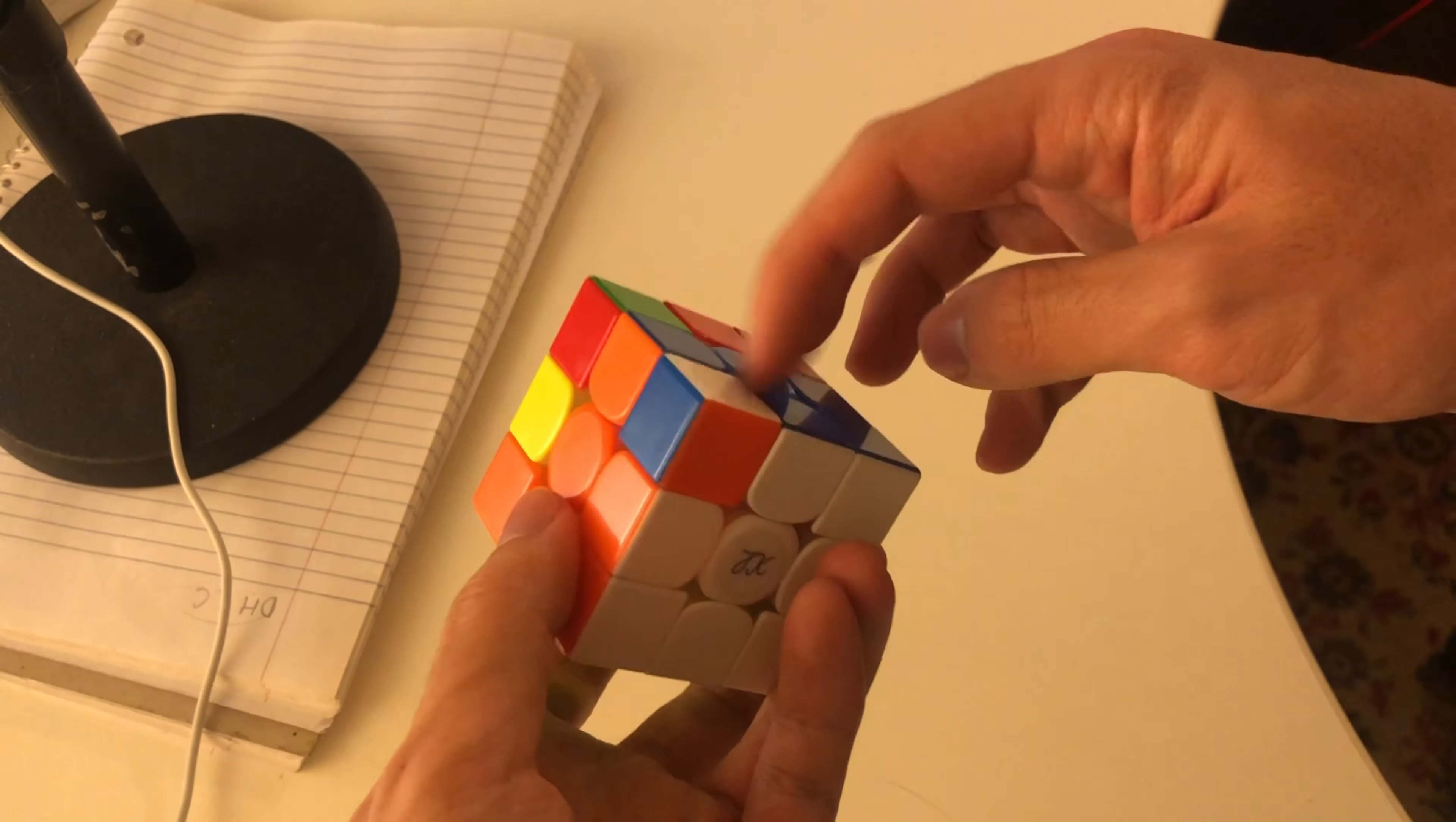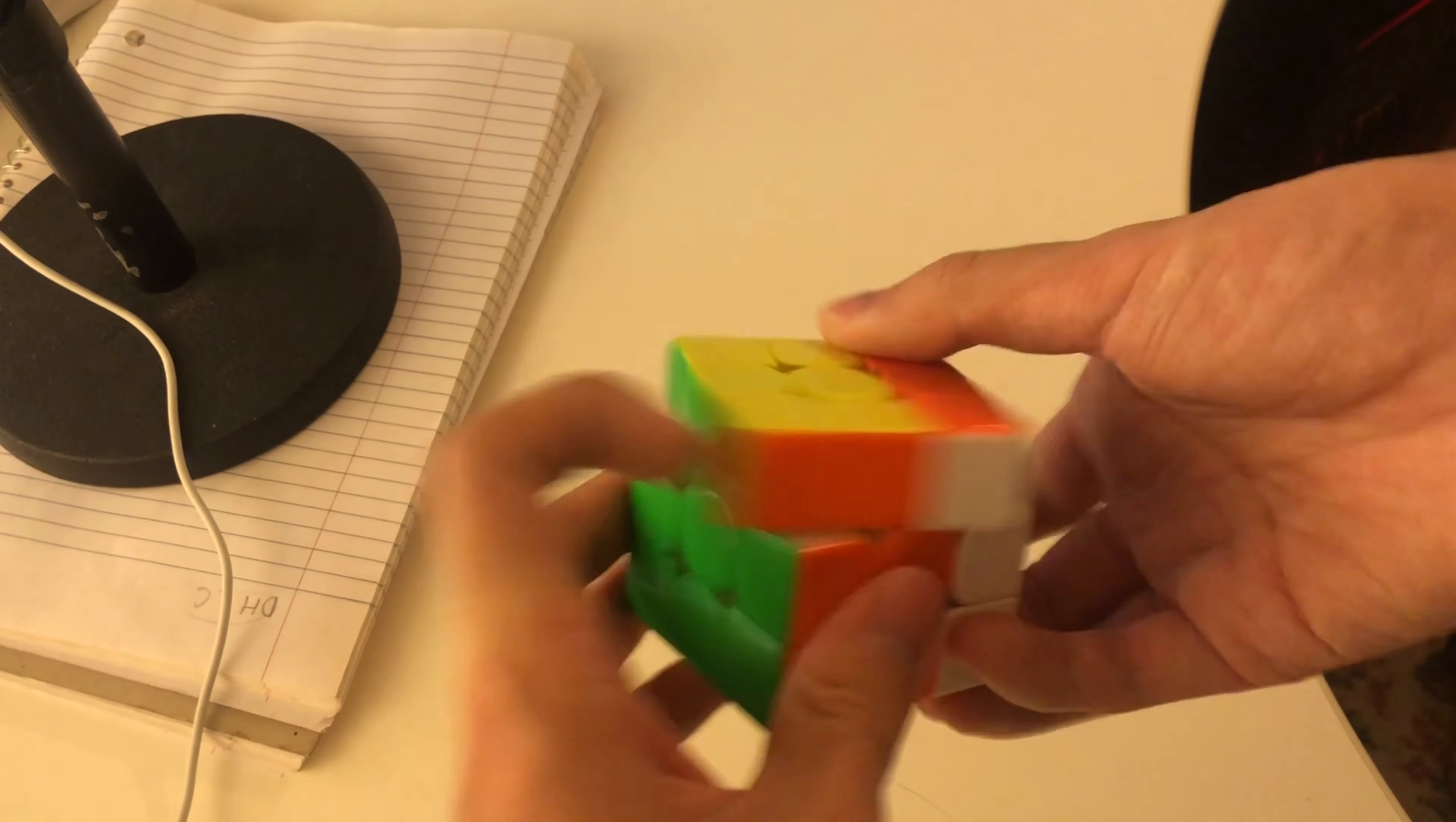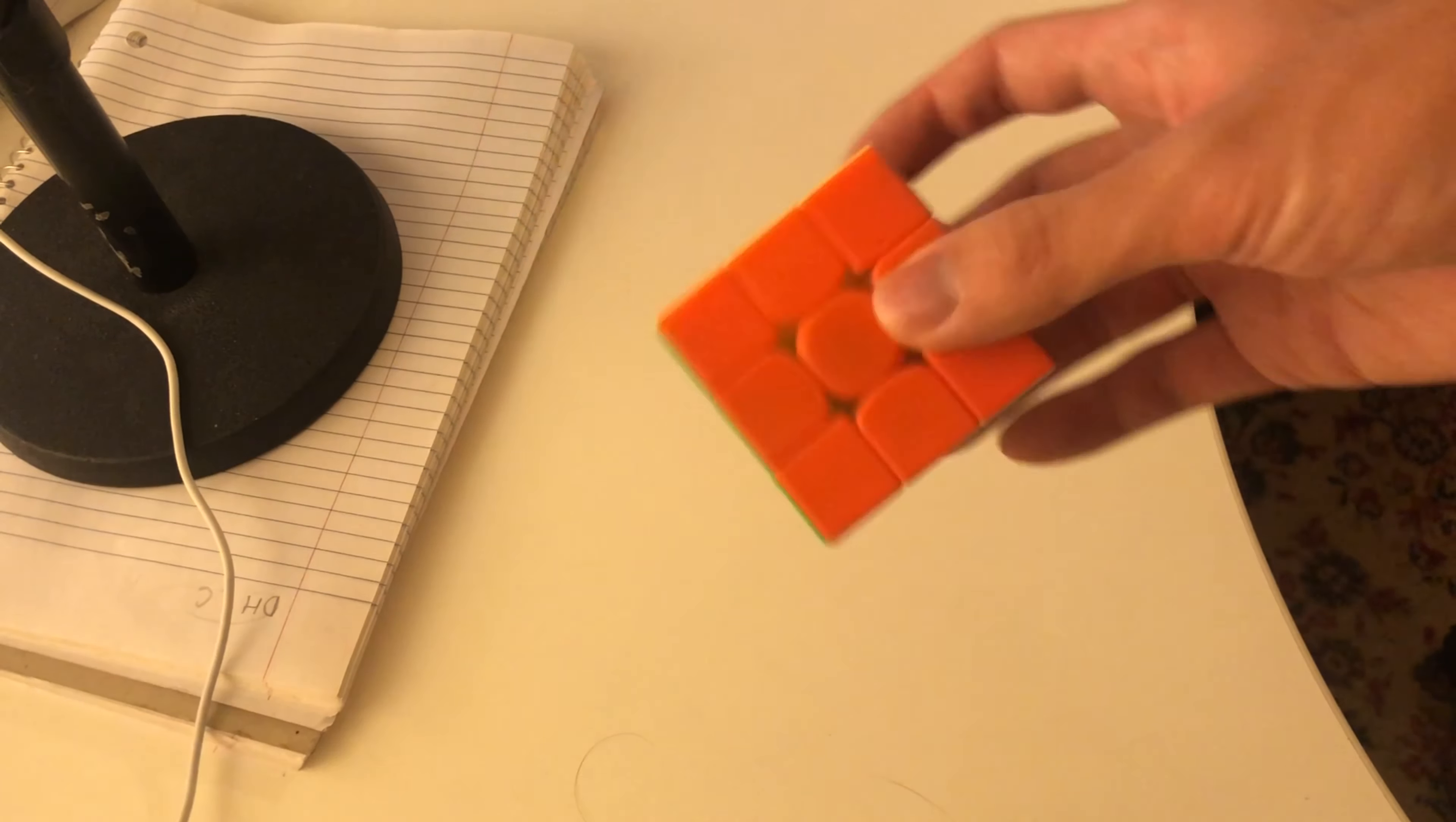And then, I guess this is not a good case, but we have one of the easiest OLLs, F-Sexy-F', followed by the easiest PLL, a good J-perm, and basically last layer doesn't get any faster than that, unless you skip a step or you do like ZBLL or something.